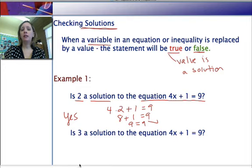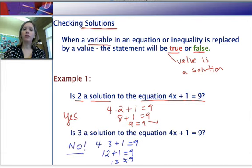If you look at the next example, is 3 a solution to that same equation? This time, we're not so lucky. If we do 4 times 3 plus 1, we want to check to see if that equals 9. 4 times 3 is 12. 12 plus 1 is 13. 13 does not equal 9. So 3 is not a solution to that equation.